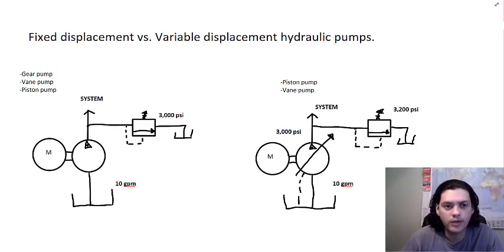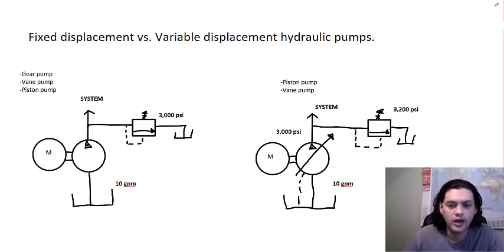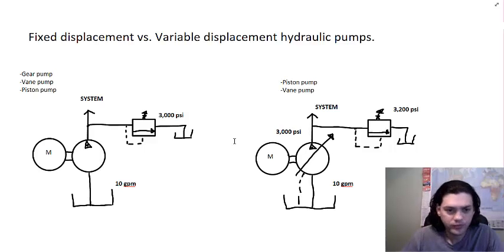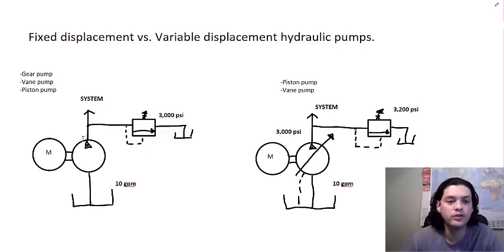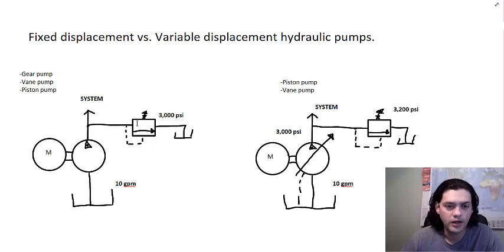Hey, this is Edgar Lindo. Let's talk about a fixed displacement pump versus a variable displacement hydraulic pump — why would you use one over the other? We have a hydraulic circuit: the one on the left is a fixed displacement pump and the one on the right is a variable displacement pump. Let's say you have a 10 GPM pump and a 3,000 PSI relief valve. The fixed displacement pump takes oil from the reservoir and pumps 10 GPM into the system. For any pressure below 3,000 PSI the pump keeps pumping fluid, and at the moment pressure reaches 3,000 PSI the relief valve opens and dumps fluid back into the reservoir.